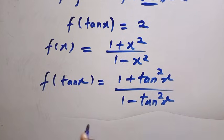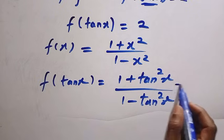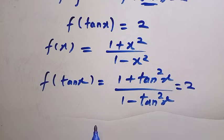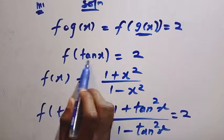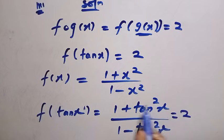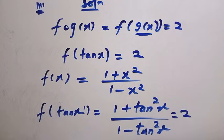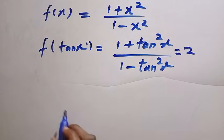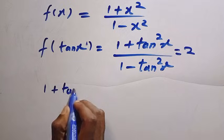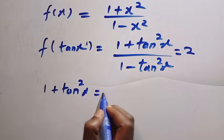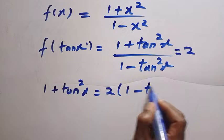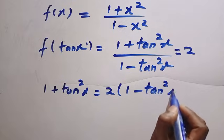Upon getting this, we know that the whole expression equals 2, because f(tan x) = 2. So anywhere we arrive here, we equate it to 2. So: (1 + tan²x) / (1 − tan²x) = 2. By cross-multiplying, we have 1 + tan²x = 2(1 − tan²x).